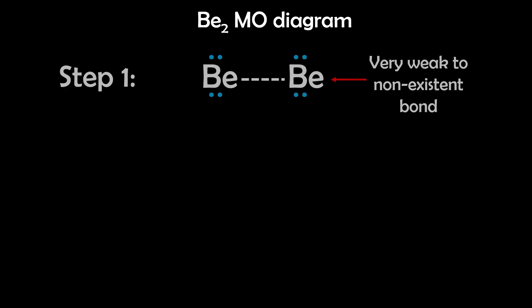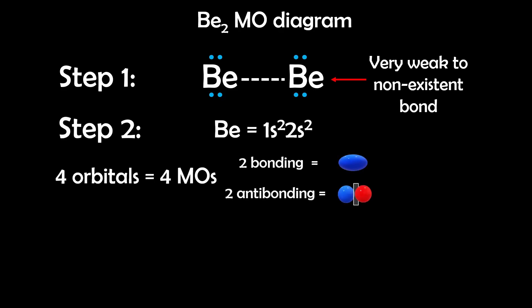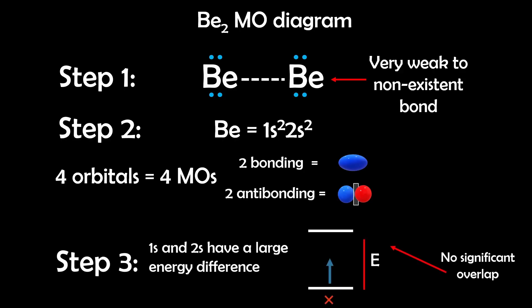Let's apply this method to Be₂. Step 1: Draw the Lewis structure — we expect a weak or no bond. Step 2: Electron configuration. Each beryllium atom is 1s², 2s², so we'll use 1s and 2s orbitals — a total of 4 atomic orbitals, giving us 4 molecular orbitals. Step 3: Orbital energy. Since both atoms are beryllium, the orbitals are the same energy.